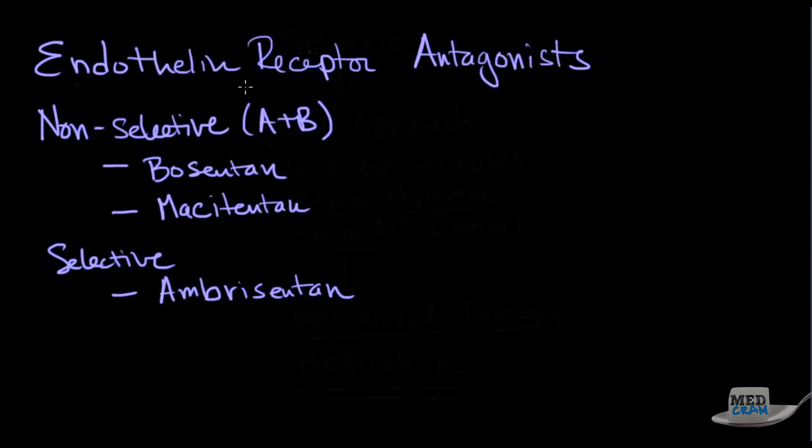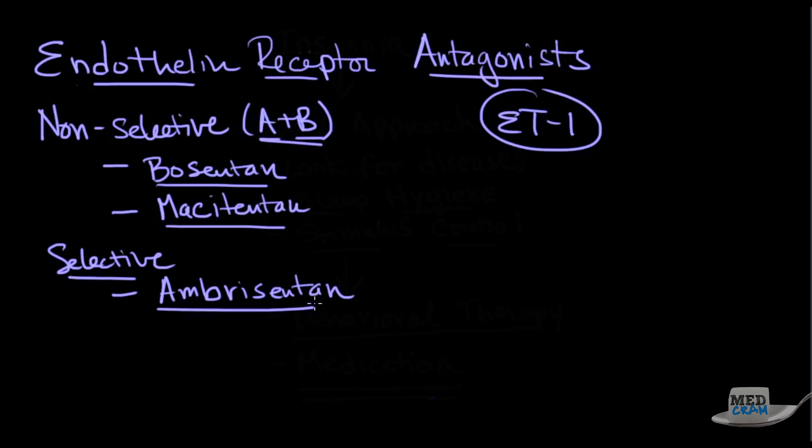The next group are the endothelin receptor antagonists. So endothelin-1 is a hormone that basically circulates around and is extremely potent vasoconstrictor. So if we could possibly block these receptors, potentially we could get some vasodilation. That's exactly what we see. There's two types of receptors, the A and B. And so bosentan and macitentan is basically a drug that blocks these receptors. It's non-selective. And it seems to reduce the PA pressures. It also, like a lot of the other medications, improves the quality of life, extends the length of time before decompensation, and increases exercise capacity. One of the selective ones is ambrisentan.